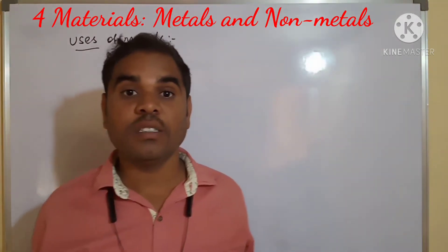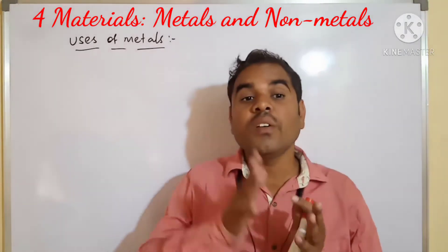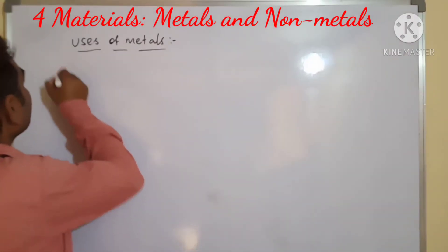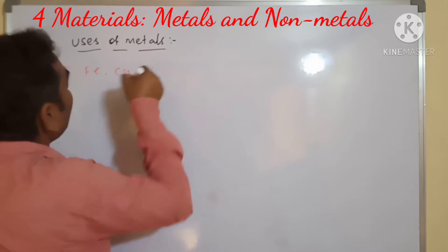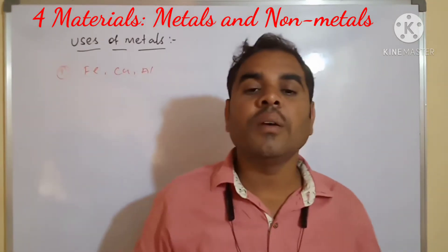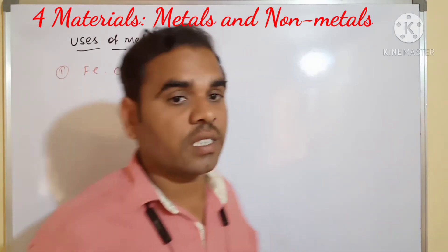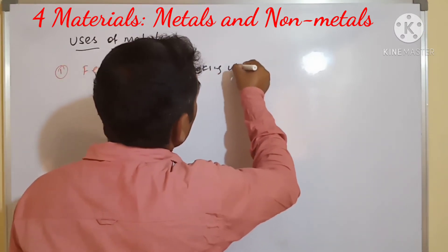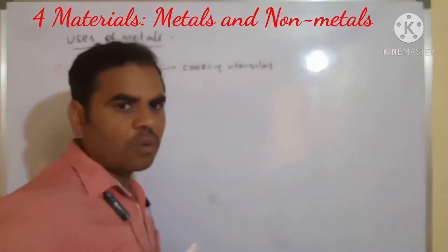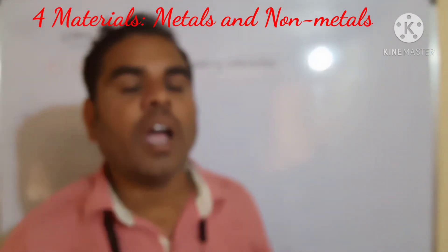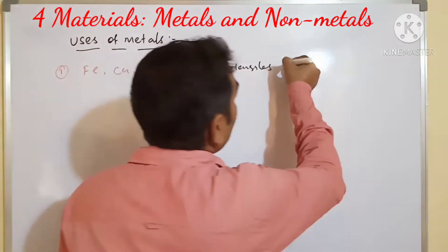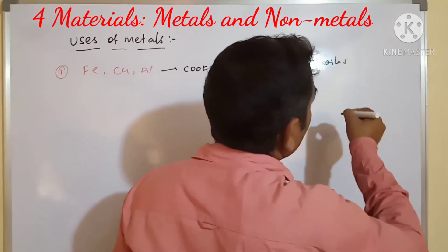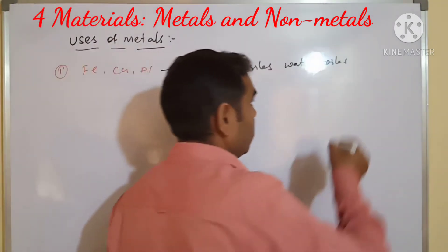Ferrous, copper, and aluminum — these metals are used to make cooking utensils. They are also used to make water boilers for factories.